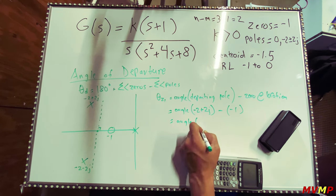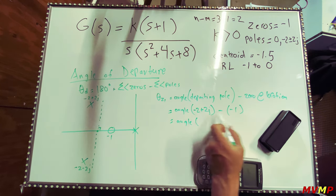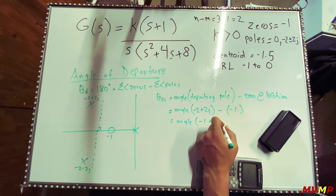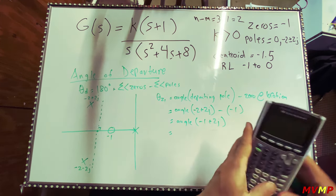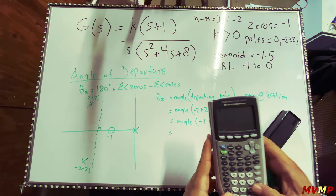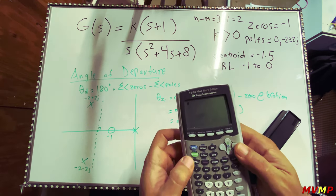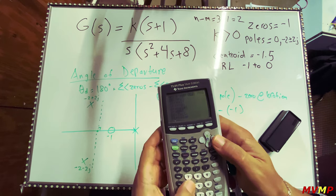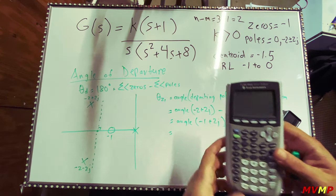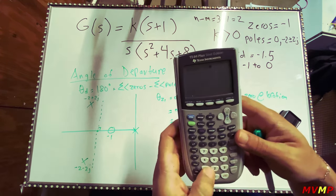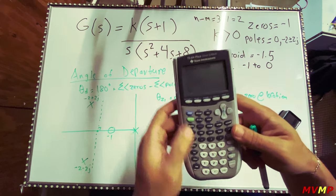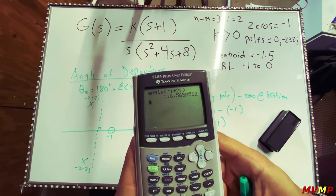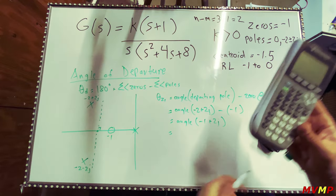Using the calculator: press Math, go to complex, press 4 for angle, type negative 1 plus 2i, and you get 116.565 degrees. To do this by hand, it's 180 degrees minus the inverse tangent of 2 over 1, since the triangle has a height of 2 and adjacent of 1. Inverse tangent of 2 is 63.435 degrees, so 180 minus 63.435 gives the same result.